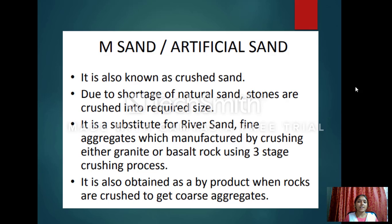M sand, or manufactured sand, is also known as crushed sand. In the absence of normal sand, big stones are crushed into small pieces of the required size — that sand is known as crushed sand. Manufactured sand is obtained from specific rock and is also used for construction purposes.